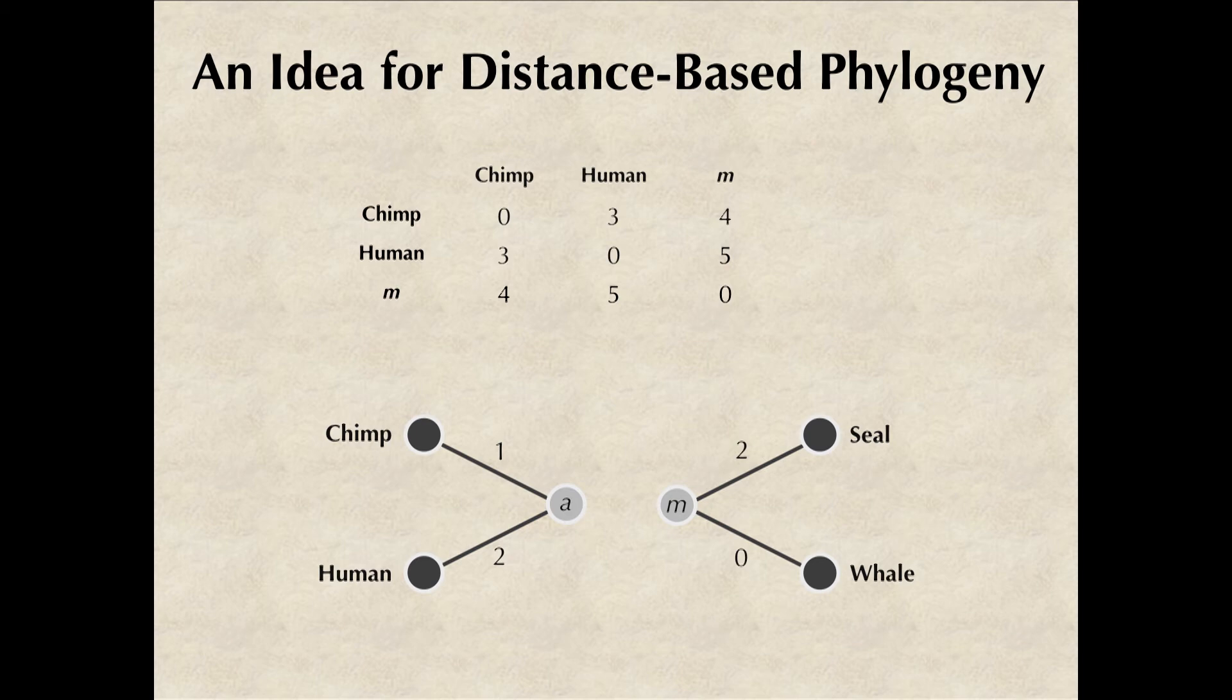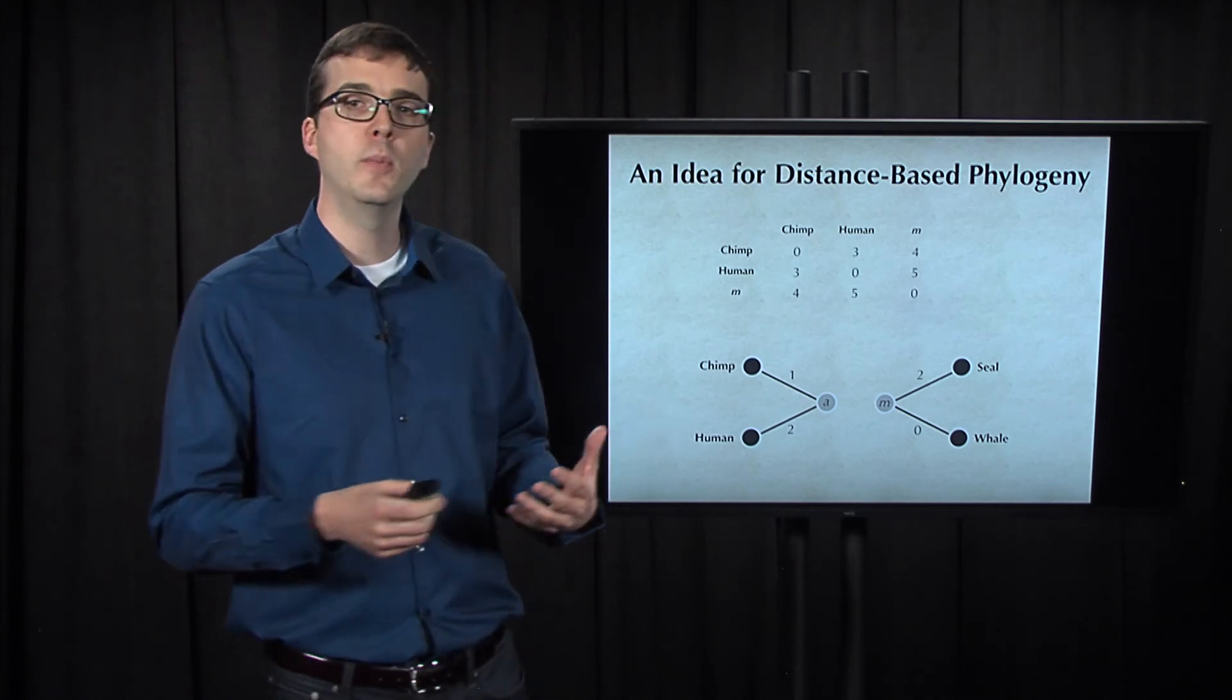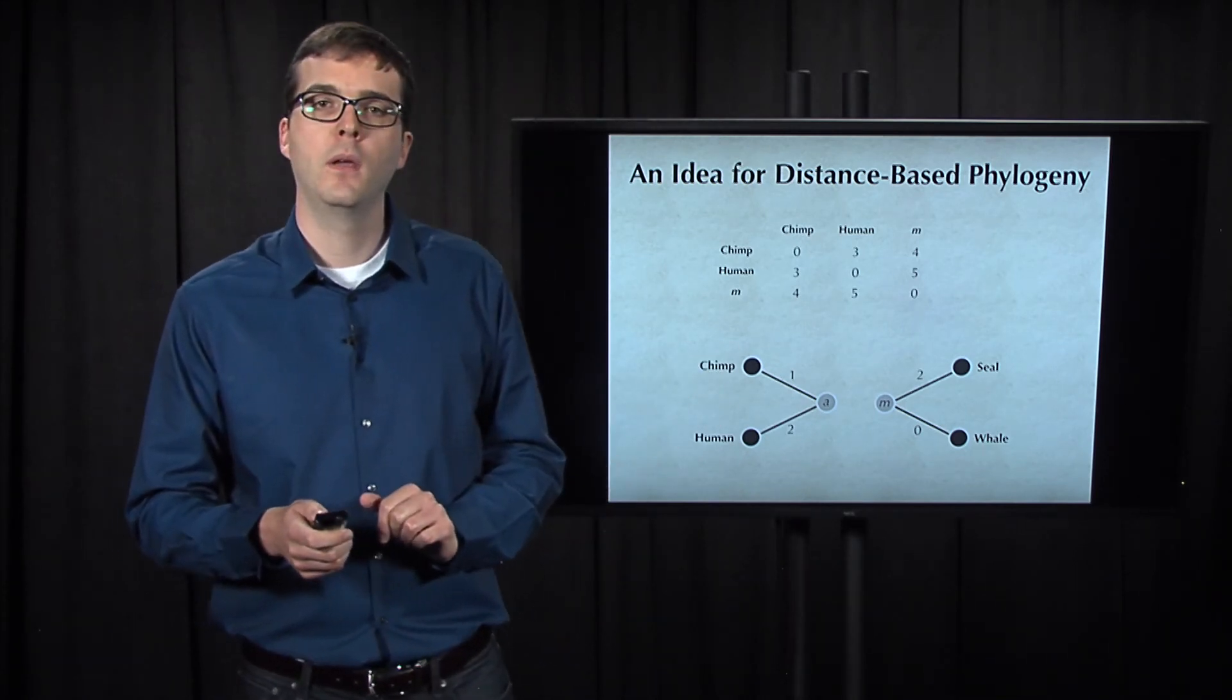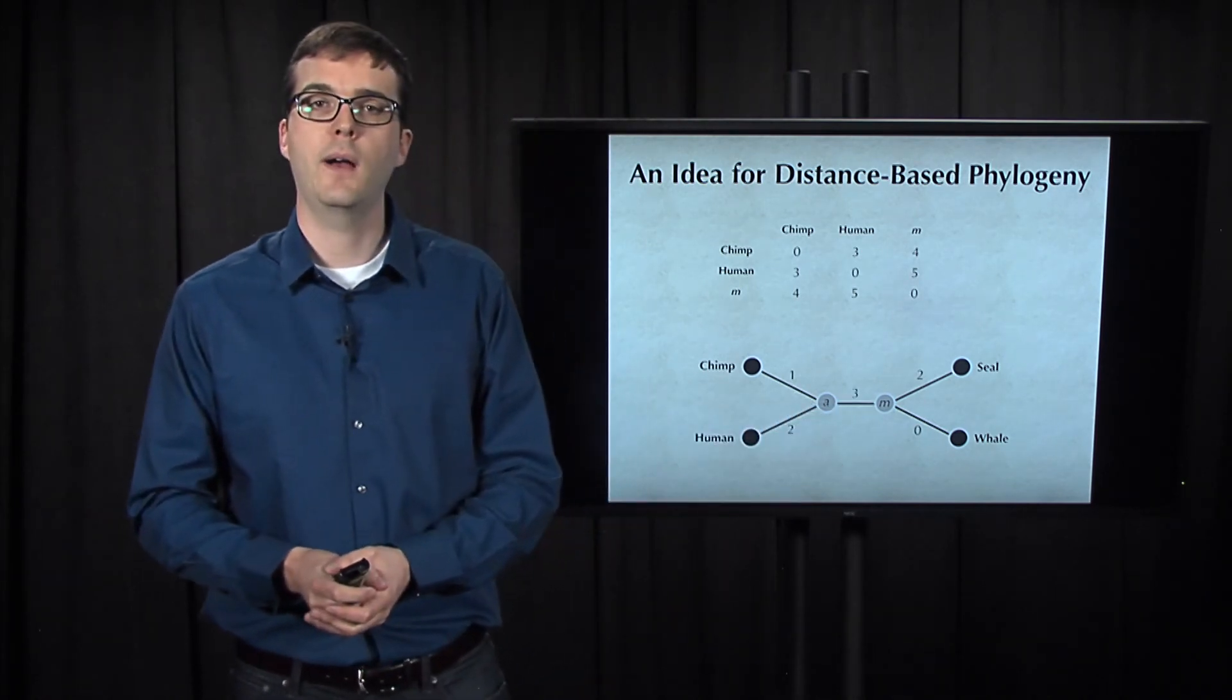Since the distance from chimp to human is 3, we can now conclude that the distance from human to a must be 2 automatically.